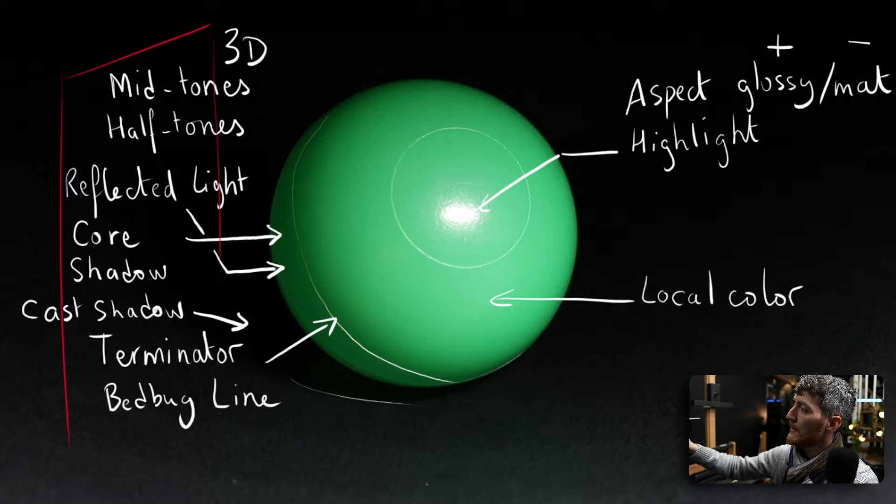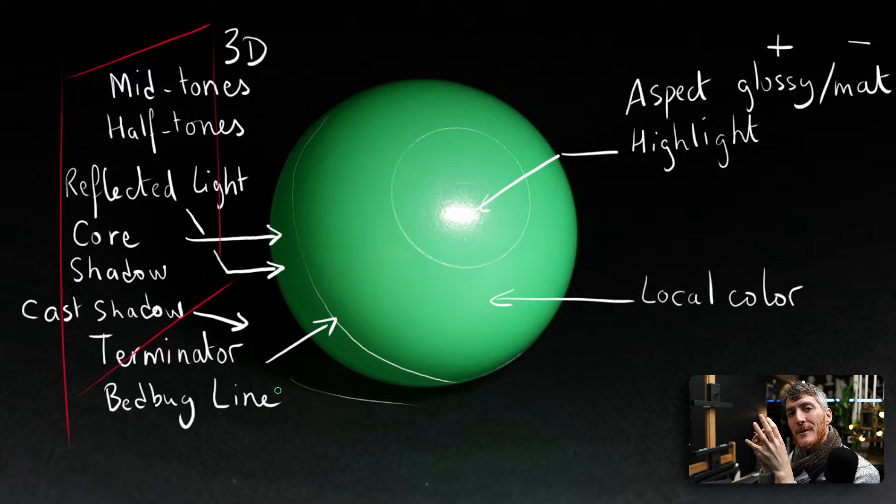So if you have a red reflective surface, the reflected light would be red — though it wouldn't be exactly red, it would be a mix between the red of the reflective surface and the green of the object. Now that we have most of the technical terms out of the way, let's see how we would mix a green to match this one.